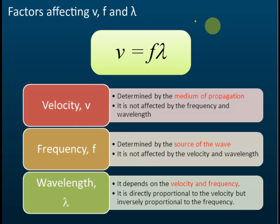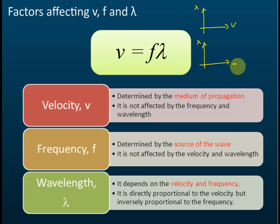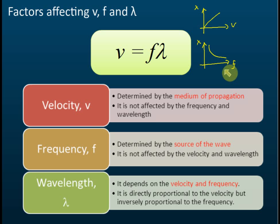If they ask you to plot a graph for lambda against v, and lambda against f: since lambda is directly proportional to v, you get a straight line that passes through the origin. Since lambda is inversely proportional to f, you get a curve. This often comes up in objective questions where they give you a few graphs and ask which one is correct. Lambda against v is a straight line through the origin; lambda against f is a curve.